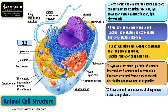The next structure is the plasma membrane. The plasma membrane is the outermost covering in the case of animal cells, as they do not have a cell wall. It is a selectively permeable membrane made up of a phospholipid bilayer and proteins. It controls the exchange of materials between the cell and outside, and also maintains a constant environment within the cell.